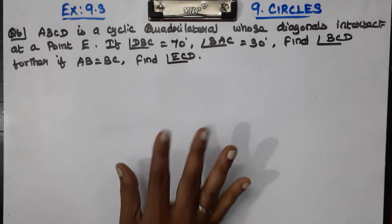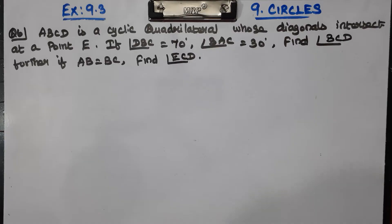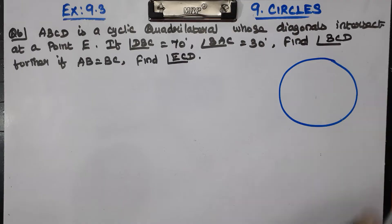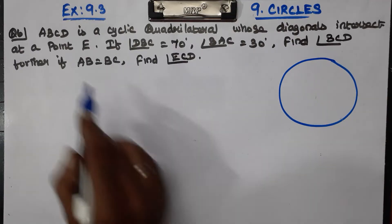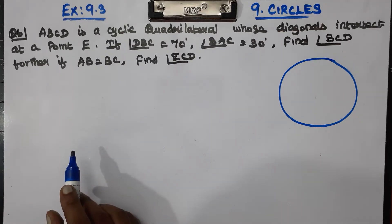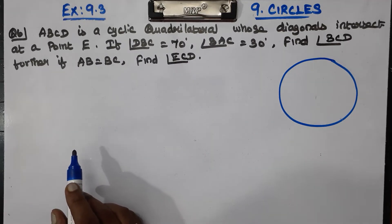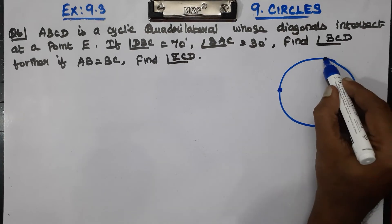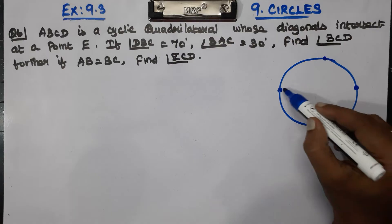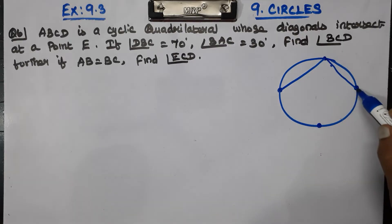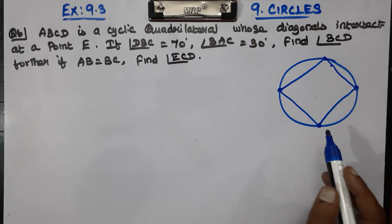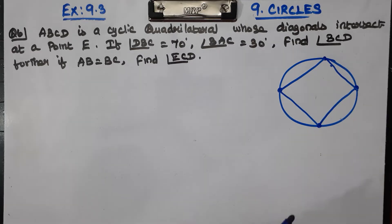Let's draw a diagram. We draw a circle with a cyclic quadrilateral ABCD. What is a cyclic quadrilateral? The opposite diagonal angles sum to 180 degrees — that's the key concept.